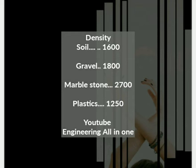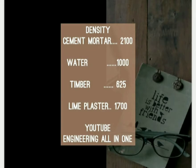Plastic possesses a density of 1250 kg per cubic meter. Cement mortar has a density of 2100 kg per cubic meter. Water has a density of 1000 kg per cubic meter.